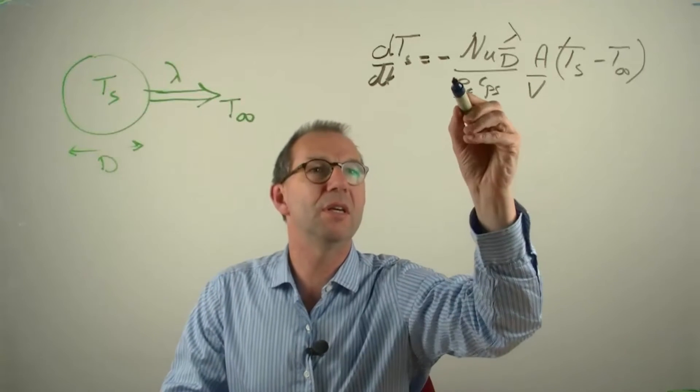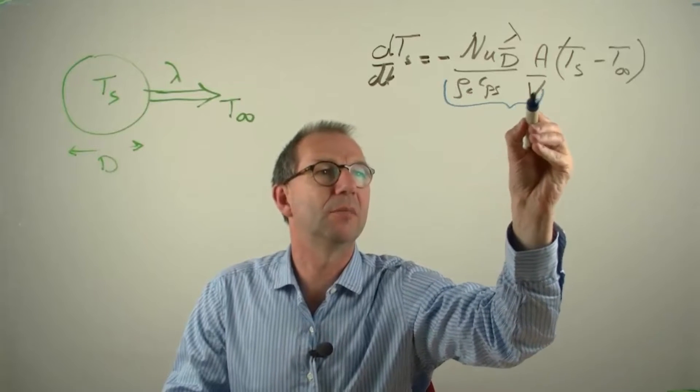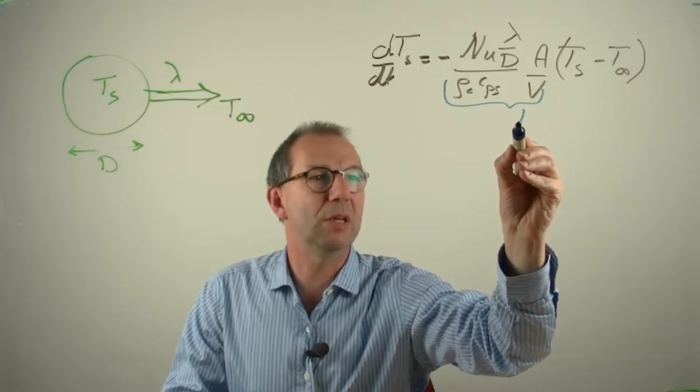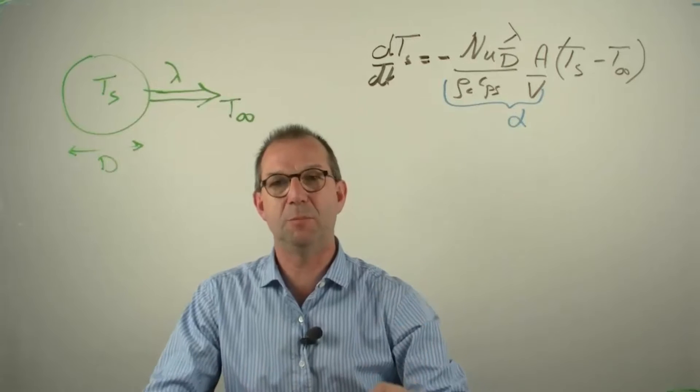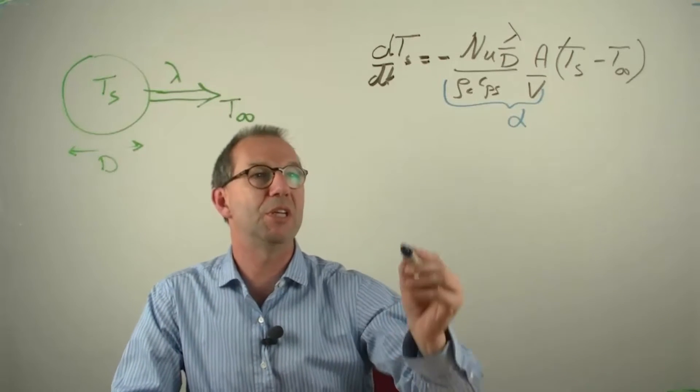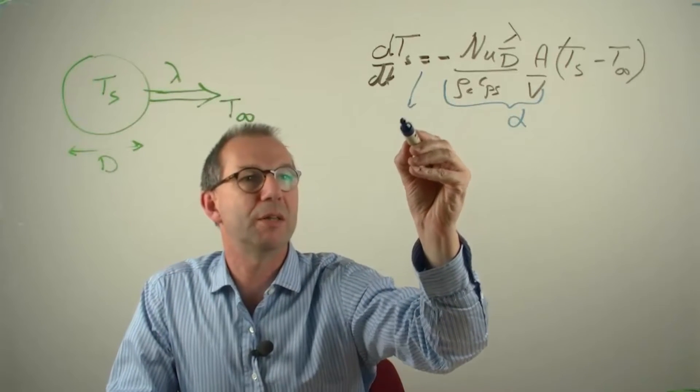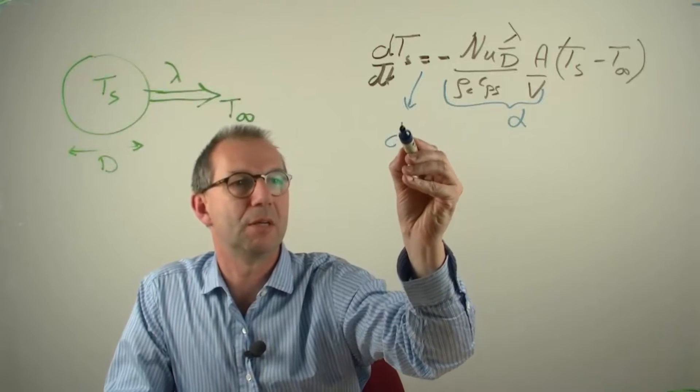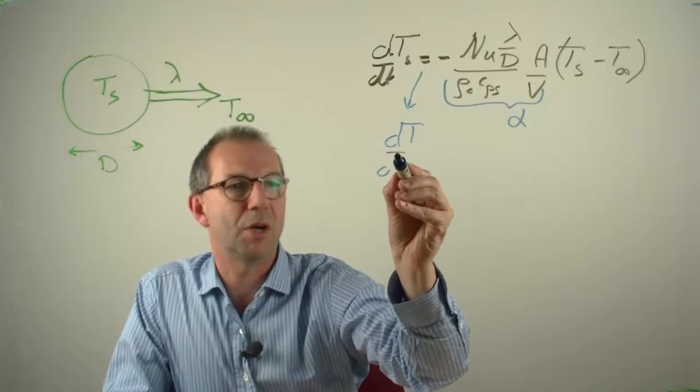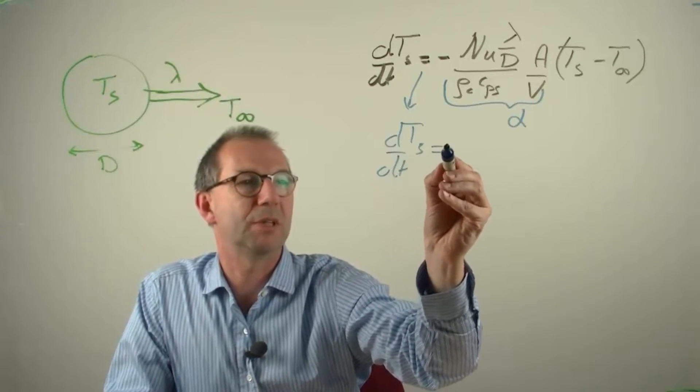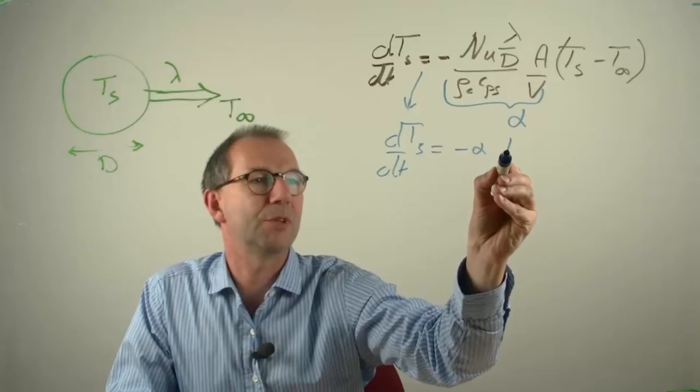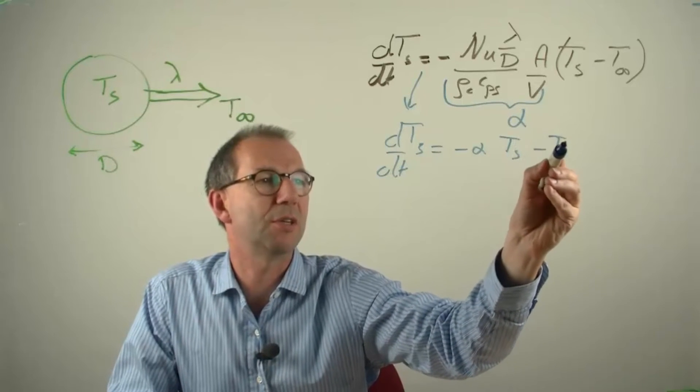Thus, what is written here, everything here, is a constant that we named alpha just to keep the notation short and better see what we need to do. So we'll rewrite this equation. The time derivative of the temperature equals minus alpha times the driving force, which contains the temperature difference.